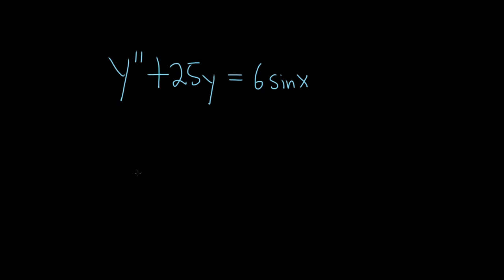In this problem we're going to solve this differential equation using the annihilator method. The very first step is to find the complementary function — in other words, you pretend that your differential equation is equal to zero and then you solve it. So I'm going to set it equal to zero and find the characteristic or auxiliary equation.